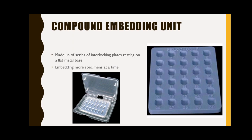Next is the compound embedding unit. This is made up of a series of interlocking plates resting on a flat metal base, forming several compartments. It has the advantage of embedding more specimens at a time, thereby reducing the time needed for blocking.